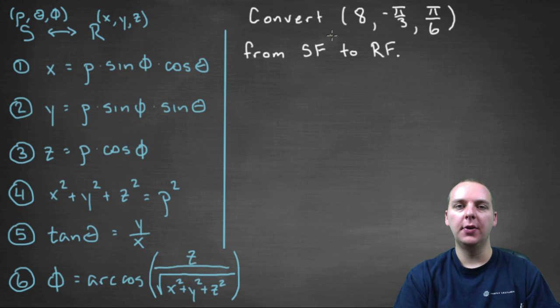In this exercise we're being asked to convert the point (8, -π/3, π/6) from spherical form into rectangular form.